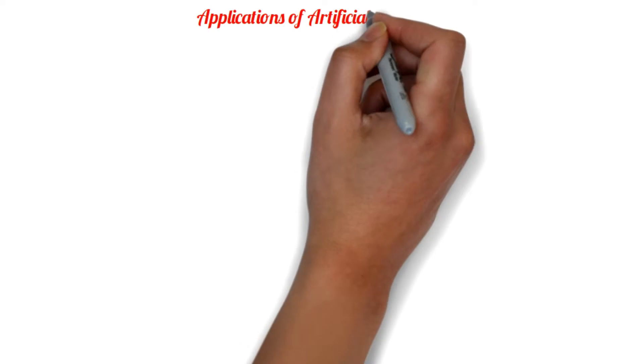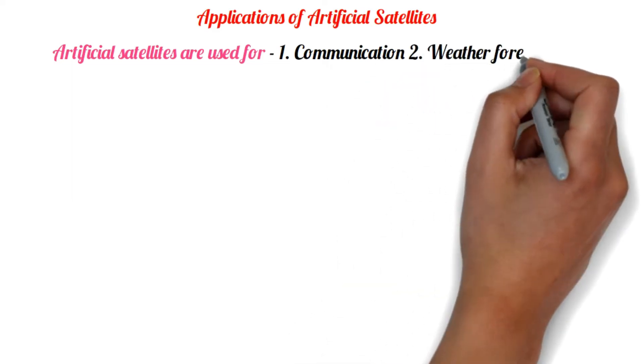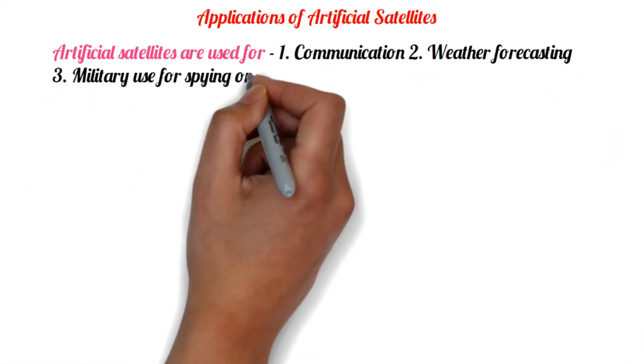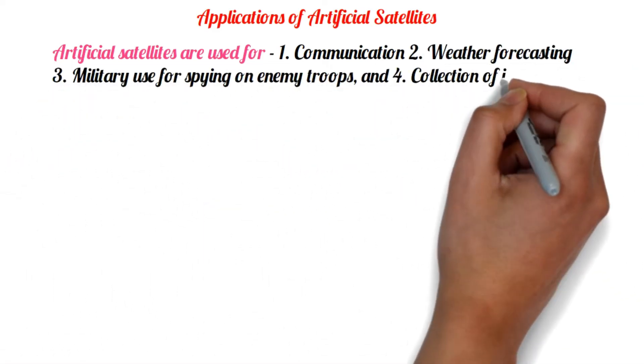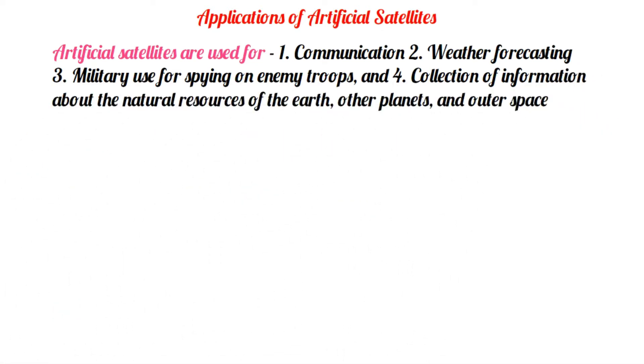Applications of artificial satellites. Basically, artificial satellites are used for communication, weather forecasting, military use for spying on enemy troops, and collection of information about the natural resources of Earth, other planets, and outer space.